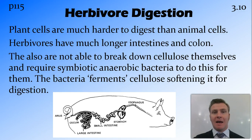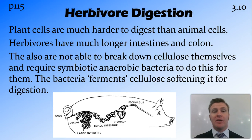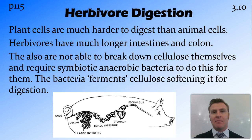However, herbivores still don't produce any enzymes that can actually break down plant material, in particular the cellulose in the cell wall. So what they have is symbiotic anaerobic bacteria that live inside them. This bacteria ferments the plant material and breaks it down, softening it into a form that can actually be digested by the enzymes that they have.